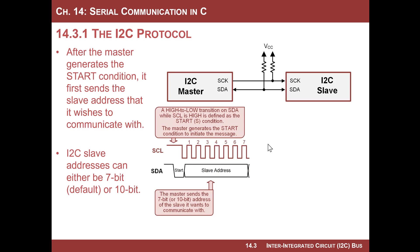So 2 to the 10 is 1024. If you use a 10-bit address, you can address over 1,000 devices, which shows that I2C is designed to facilitate a lot of different slaves. Periods 1 through 7 are the slave address — 7 pulses because the 7-bit slave address is the most common, and that's what we'll always look at.